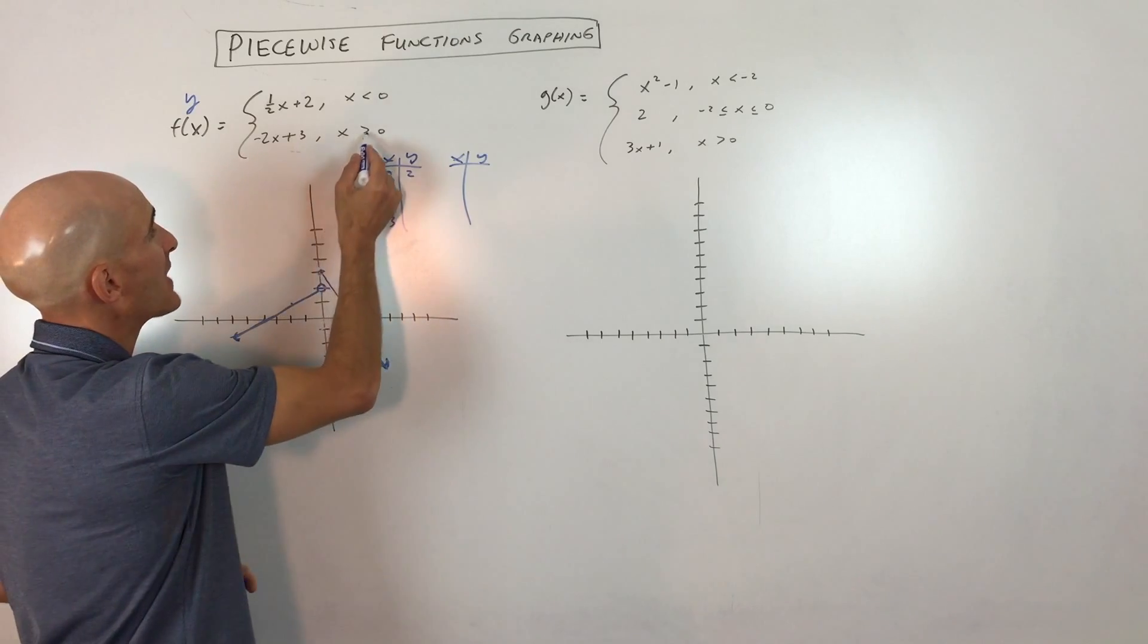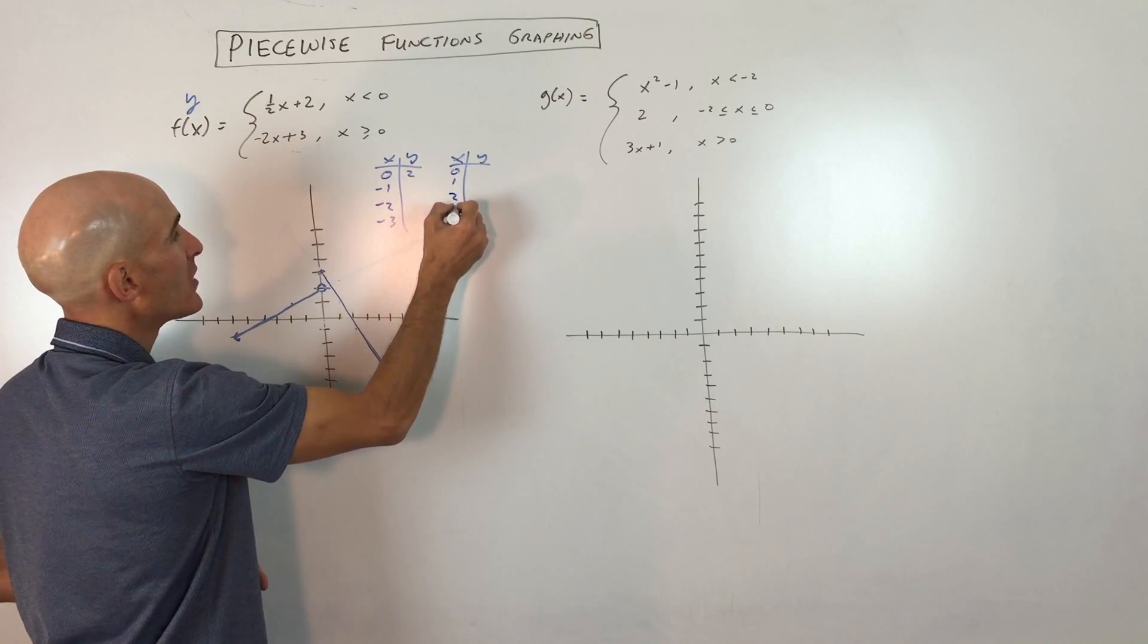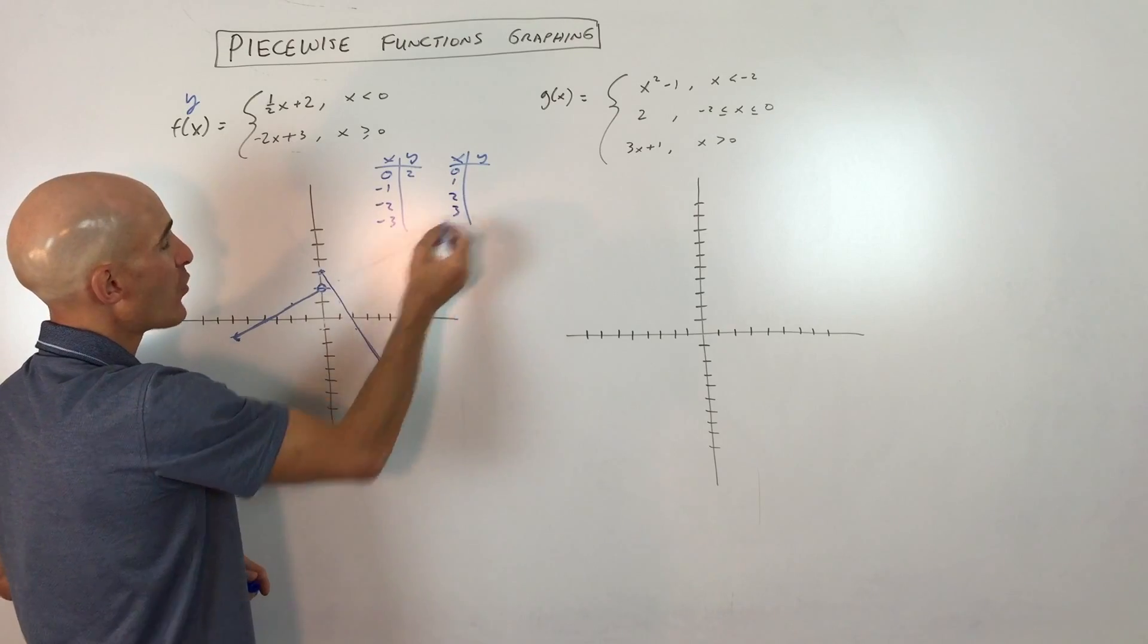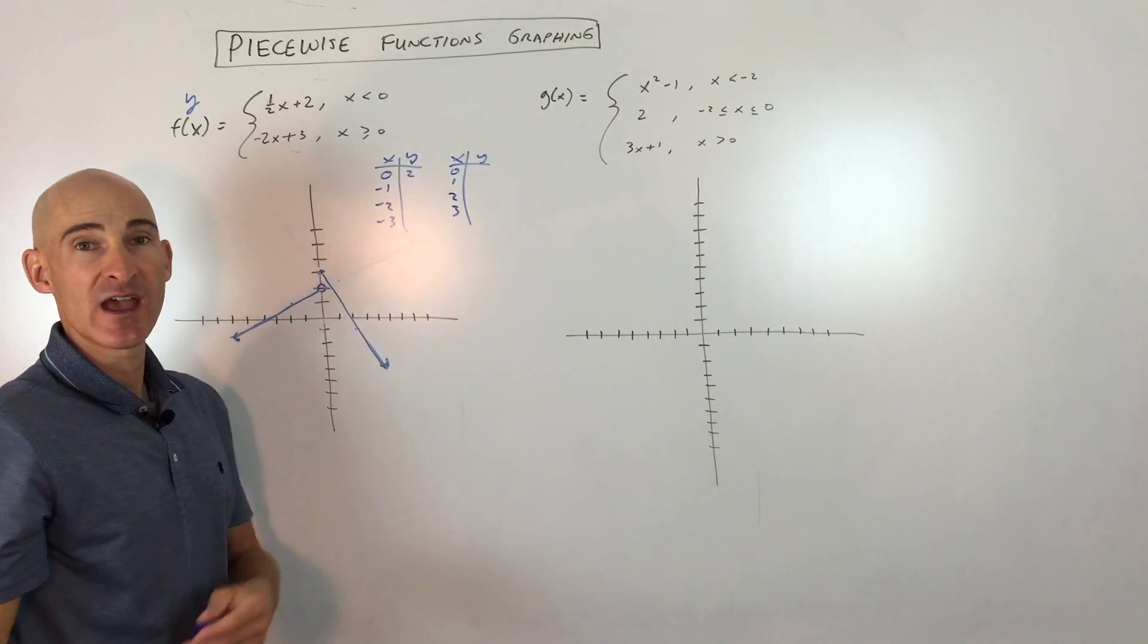Same thing for this one. You can say, okay, when x is greater than or equal to 0, 0, 1, 2, 3, put those values in, get your y coordinates, plot those points, and you can do it that way.